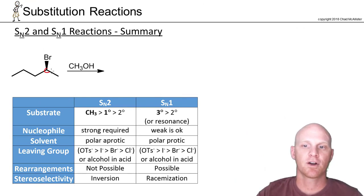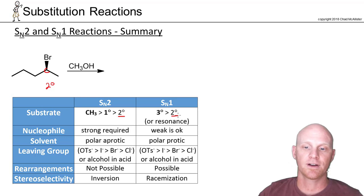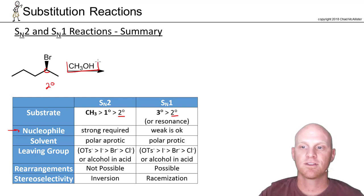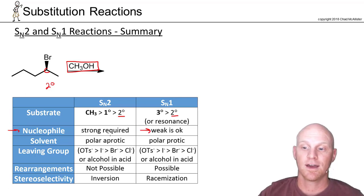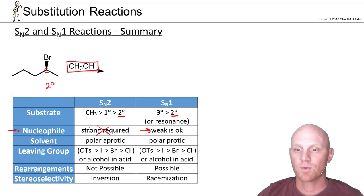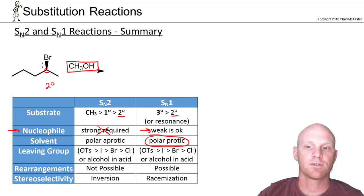To determine the mechanism here: the substrate is a secondary halide, which is a problem — it doesn't rule out either SN1 or SN2. The nucleophile is methanol, which is the only thing listed, meaning it's probably both nucleophile and solvent. Methanol has no negative charge, it's not ionic, so it's a weak nucleophile — that means we're not doing SN2. We're doing SN1. Methanol is also a polar protic solvent, which also supports SN1.